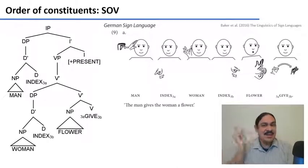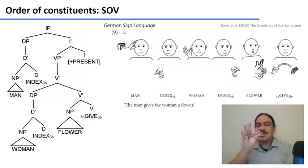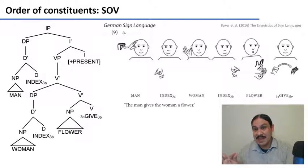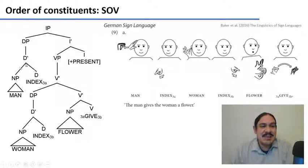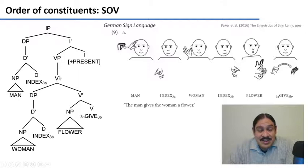So: man, woman, flower — and then 'give' has several components. First, it starts with the classifier for slender objects, because a flower is a slender object. Then giving is moving from the position of who gives into the position of the receiver — from position 3a onto position 3b. The order is: man position 3a, woman position 3b, flower, give conjugated for giving from position 3a to 3b. As a whole, the sentence is subject, object, verb, and the person you're giving it to is set in the adjunct position in one of the V-bar positions.